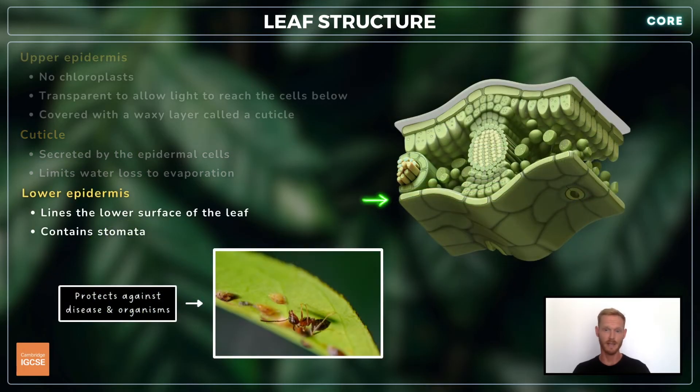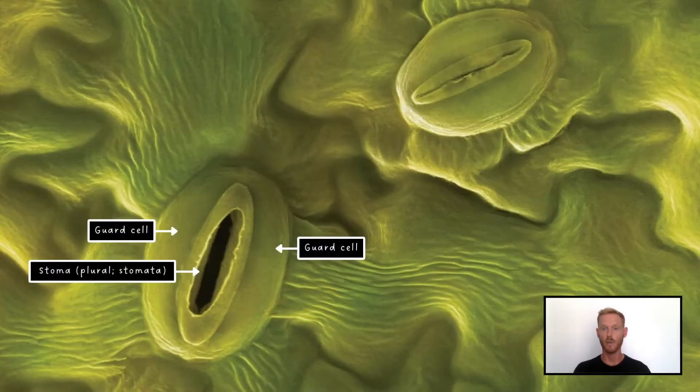The lower epidermis acts as a protective layer and contains stomata, which allow the carbon dioxide needed for photosynthesis and oxygen produced as a by-product to move into and out of the leaf. Each stoma is surrounded by a pair of guard cells, which determine whether the pore is open or closed.